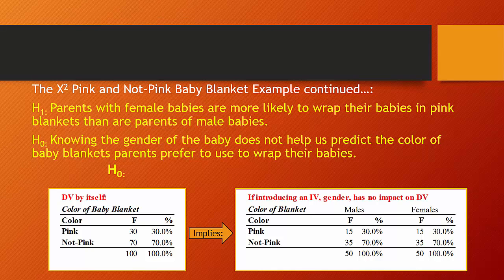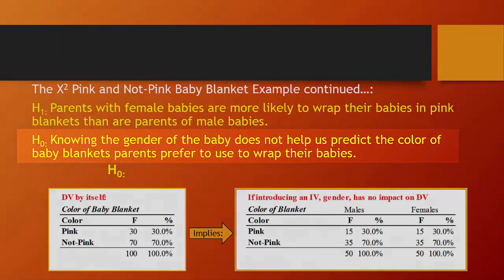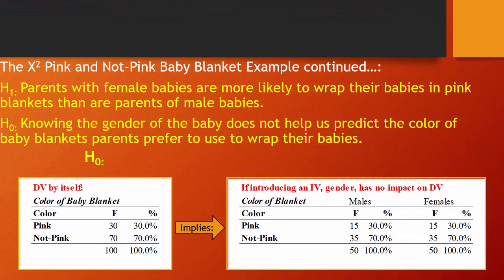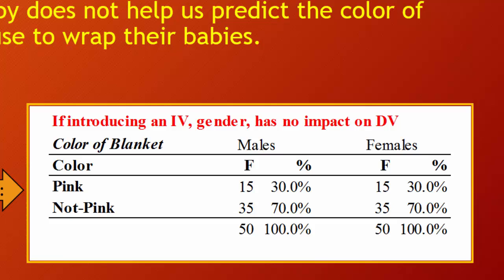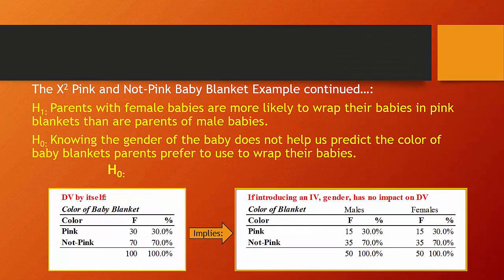If we took the distribution of babies — 30 wearing pink, 70 not wearing pink — and had a null hypothesis that the gender of the baby does not help us predict blanket color, then we would expect that 30% to carry across all observations regardless of gender. So with 50 males, we'd expect 15 of 50 (30%) to have pink blankets, and 15 of 50 (30%) of the females to have pink blankets. That's the expected cell count if the null hypothesis were true.